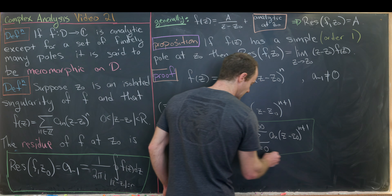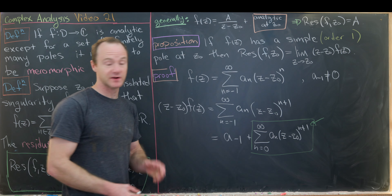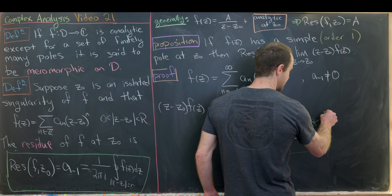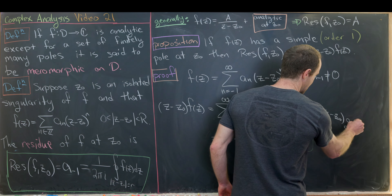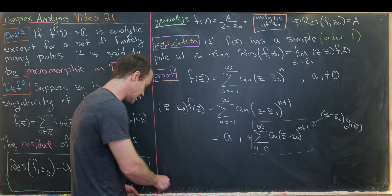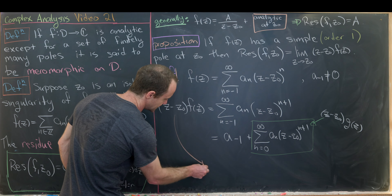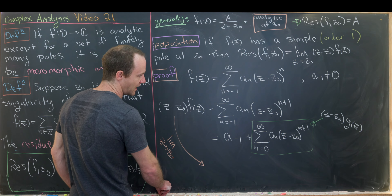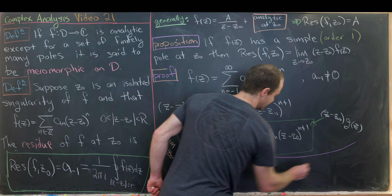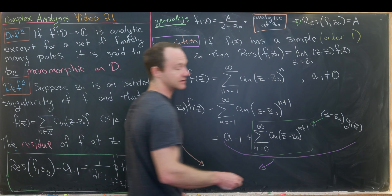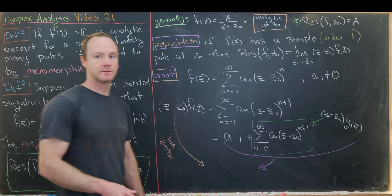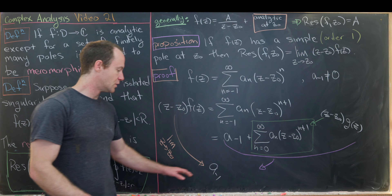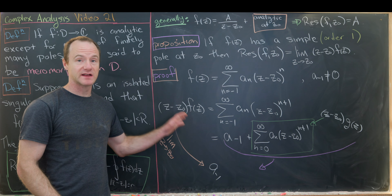That remaining sum can be written as (z − z₀)·g(z). Taking the limit as z → z₀ of both sides, the (z − z₀)·g(z) term goes to zero since g is analytic at z₀, and we're left with a₋₁, which is exactly the residue. This completes the proof.